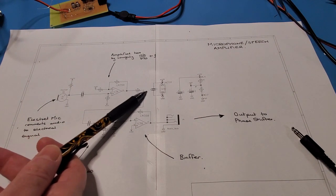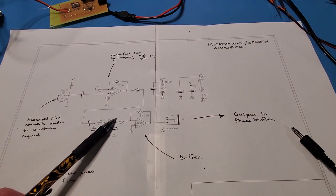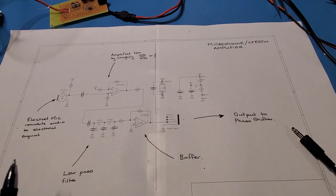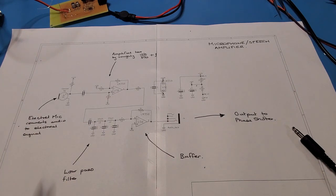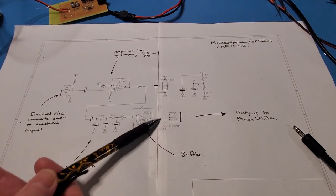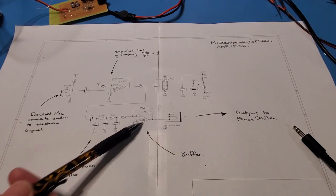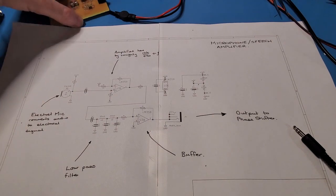After that it passes through this low pass filter configured for 470 ohms for input and output impedance, and it roughly cuts off signals after about 3.5 to 4kHz. Then the signal passes through the second half of the op amp configured as a buffer with not much gain, and finally it gets output to the audio jack.